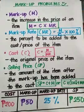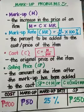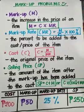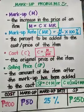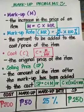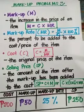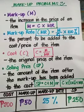The markup rate is the percent to be added to the cost or price of the item — how many percent you add on top of your product's price. To solve for the markup rate, you divide the markup by the cost, then multiply by 100 percent.